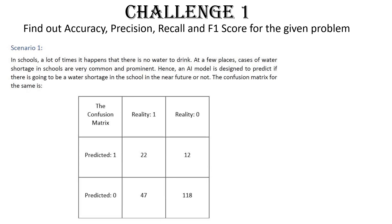Now let's take an example. The scenario is finding accuracy, precision, recall, and F1 score — a four-mark question asked in exams, taken from the NCERT textbook. An AI model is designed to predict if there is going to be a water shortage in the school in the near future. The confusion matrix is given; you have to calculate all four metrics.